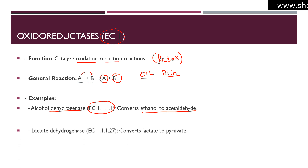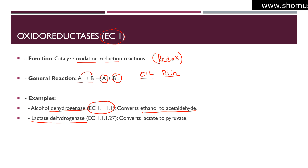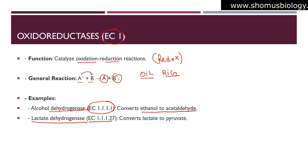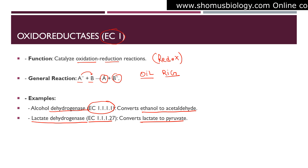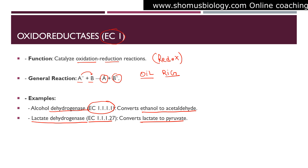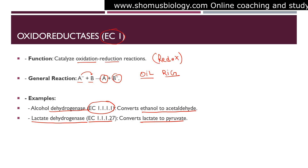Lactate dehydrogenase (EC 1.1.1.27) converts lactate to pyruvate or pyruvate to lactate — it works both ways. These are two very common examples of oxidoreductase enzymes.